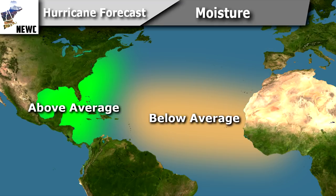My moisture forecast shows above-average moisture near the East Coast and Gulf Coast of the United States, as well as down into the coastal regions of Mexico, and below-average moisture off the coast of Africa all the way almost to Puerto Rico. What's really interesting to note is that's the area where most of the early development of big hurricanes happens — where there is and will be below-average moisture, and where most hurricanes start and make their way all the way across the Atlantic.